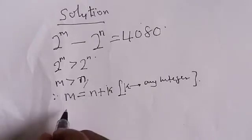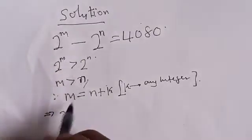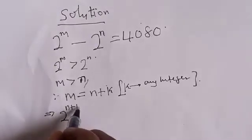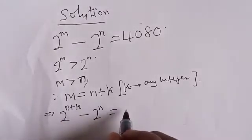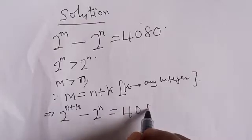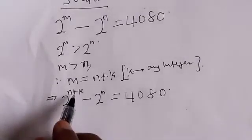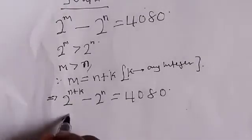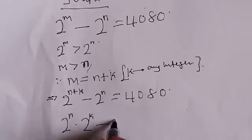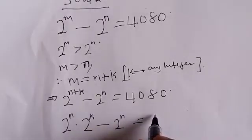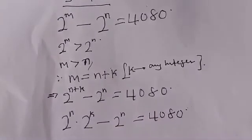This implies that wherever you see m, you substitute n plus k. So we can write: 2 raised to power (n plus k) minus 2 raised to power n is equal to 4080.